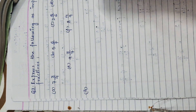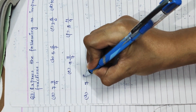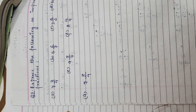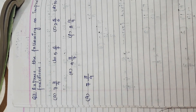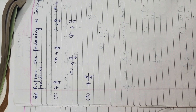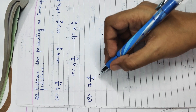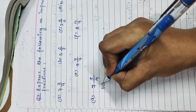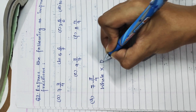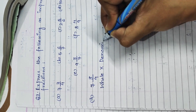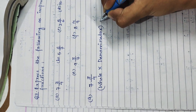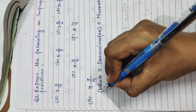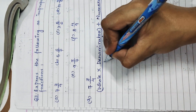Part A is 7 whole 3 upon 4. We need to convert this mixed form into improper form. There is a simple formula: whole multiplied by denominator plus numerator, divided by denominator. I have explained this formula earlier when discussing definitions.